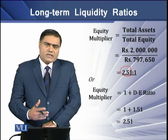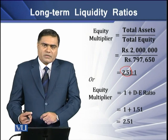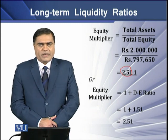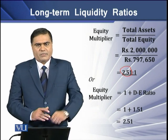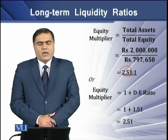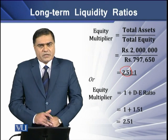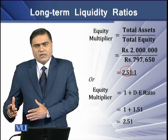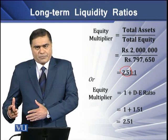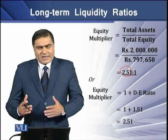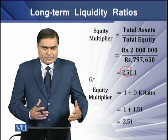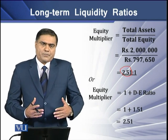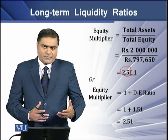What is the relationship of this ratio with total debt or long-term debt? If we add to the total debt, there is an increase in total assets, keeping equity the same. So equity works as a multiplier.